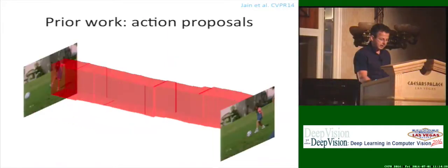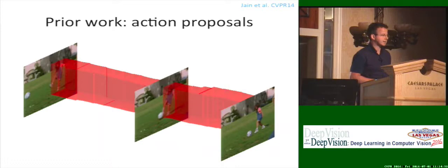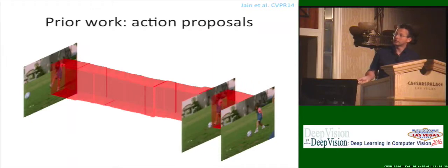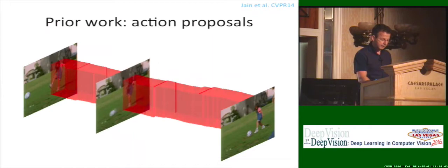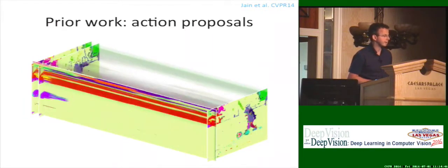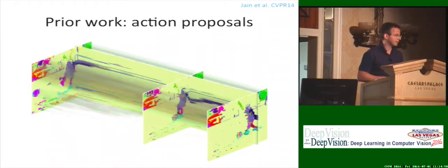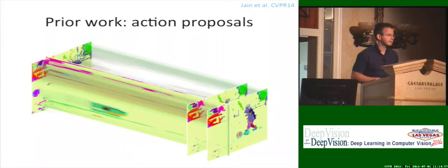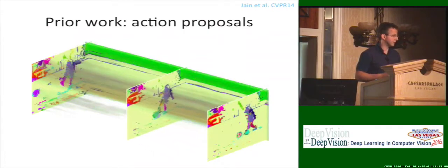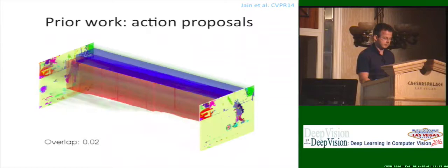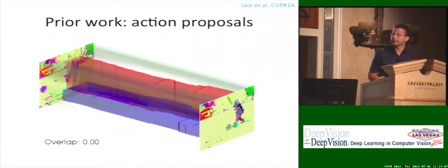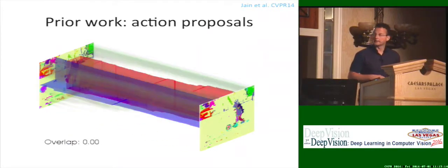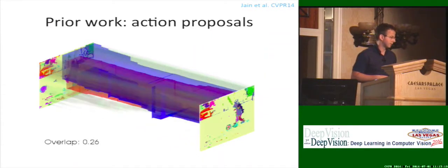There has been some prior work on generating action proposals. So here we see a video of a girl playing soccer. The box nicely goes through the video. What people have been doing is, for example, generate super voxel segmentation of this video, then describe each of the super voxels by color, texture, shape, size, and fill statistics, and do a hierarchical merging of these super voxels to generate proposal candidates. Here you see some examples. The red one is the one we are interested in, and the blue ones are generated by hierarchical clustering of these super voxels, in a similar fashion as selective search does it for object proposals in images.